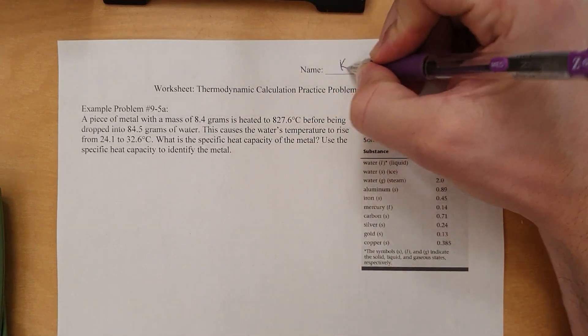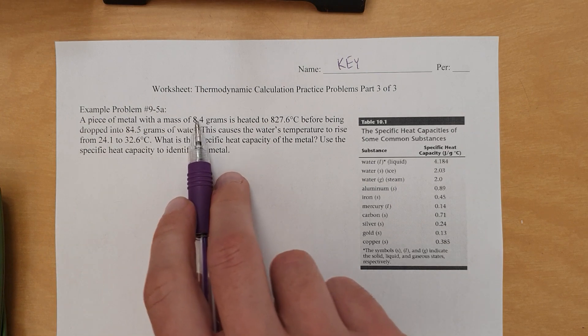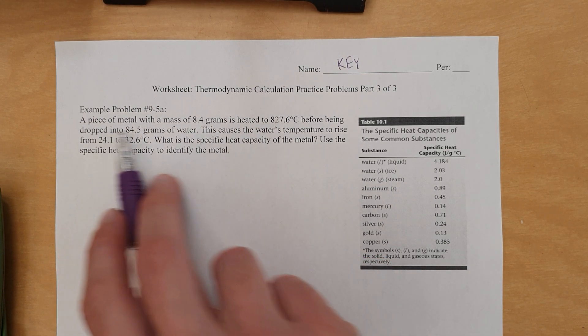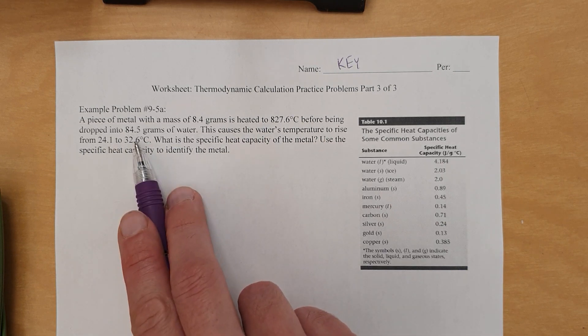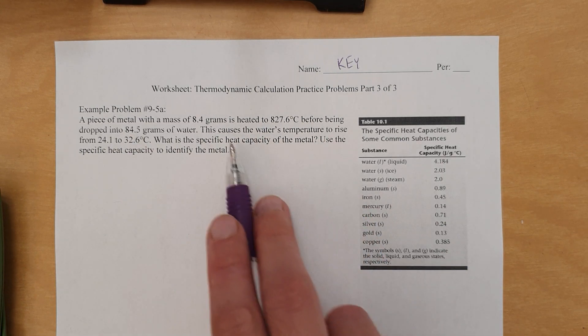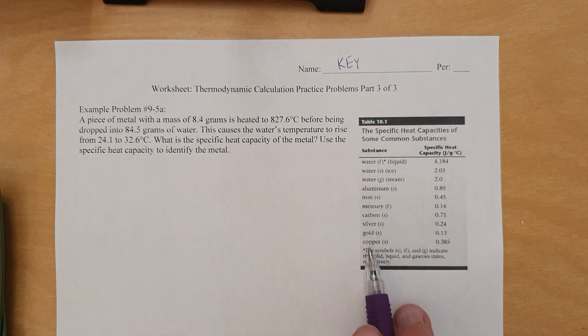Let's go through this one. Let's do one of the two questions as an example. So a piece of metal with that mass is heated pretty hot and then dropped into water. This causes the water's temperature to rise. What's the specific heat capacity of the metal? Of the metal is an important piece of information.